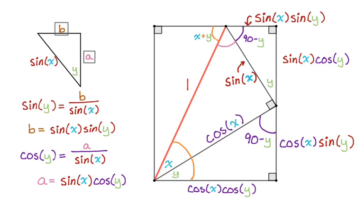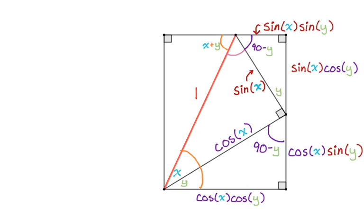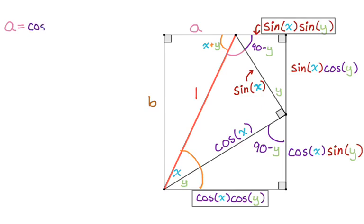Now we move into the final triangle — the one on the left that has an angle of x plus y and a hypotenuse of one. Side A is the whole bottom segment, which is cosine x cosine y, minus the little part we know from the top — sine x sine y. I'm making this video because this picture is very confusing when you're just given the filled-in figure. But if you go through it and fill it in, it's really not that bad.